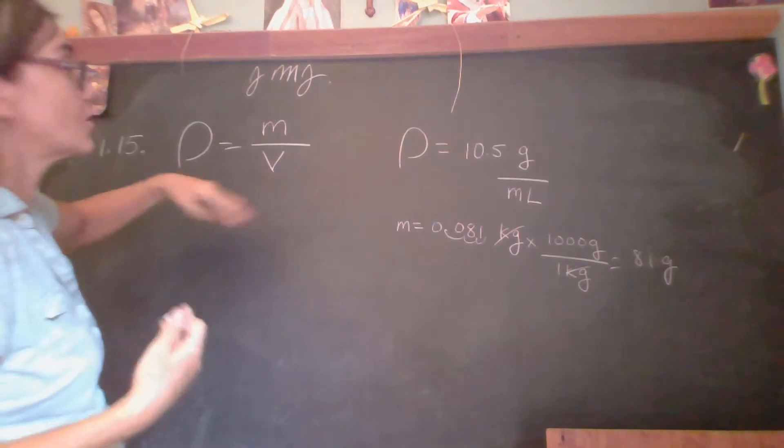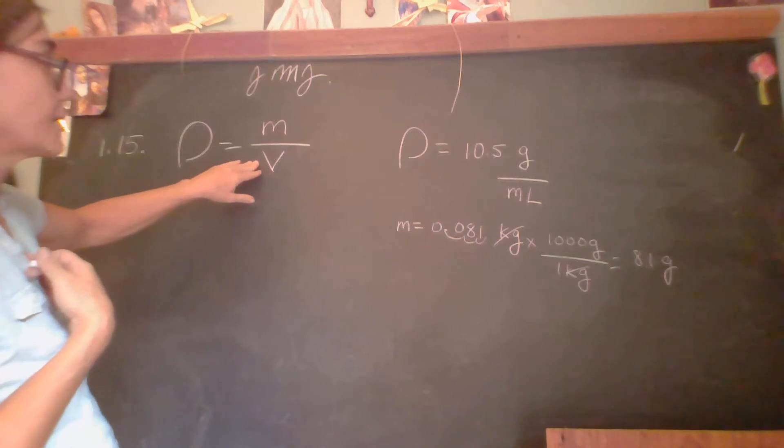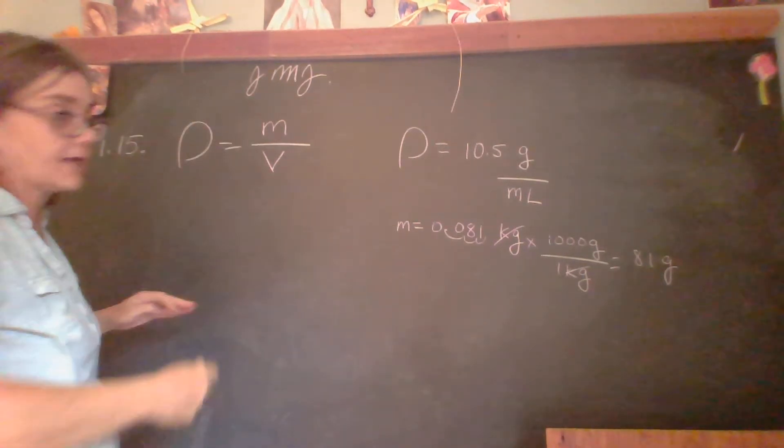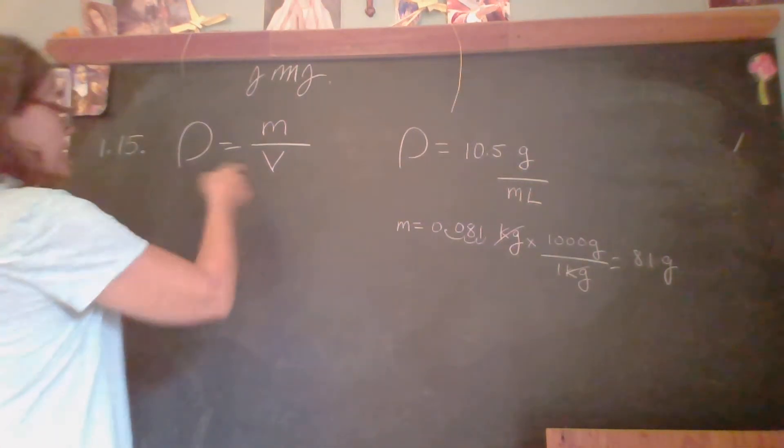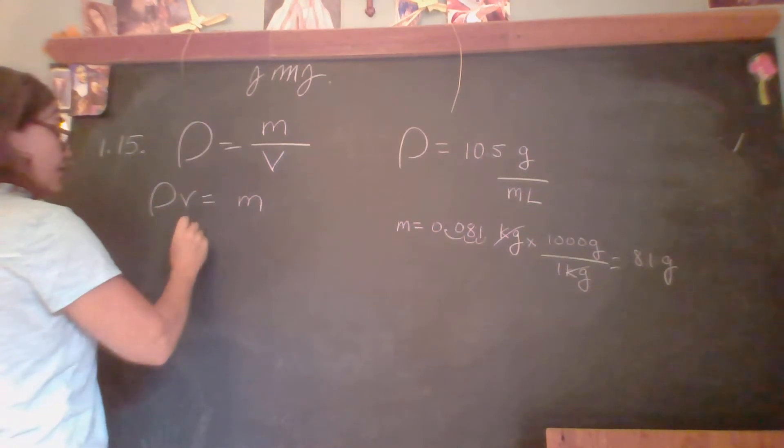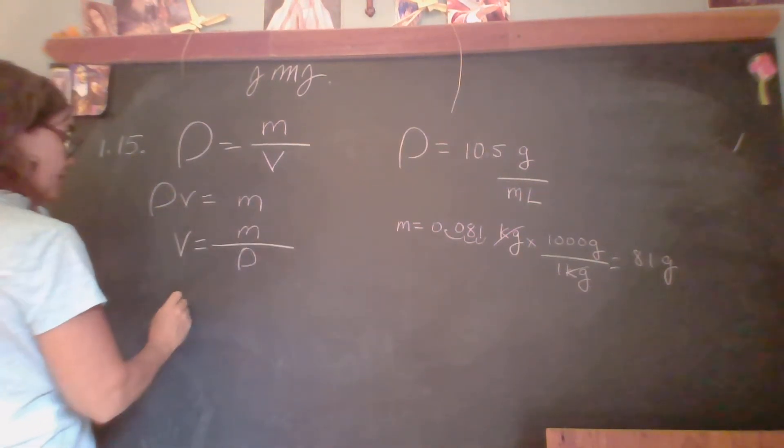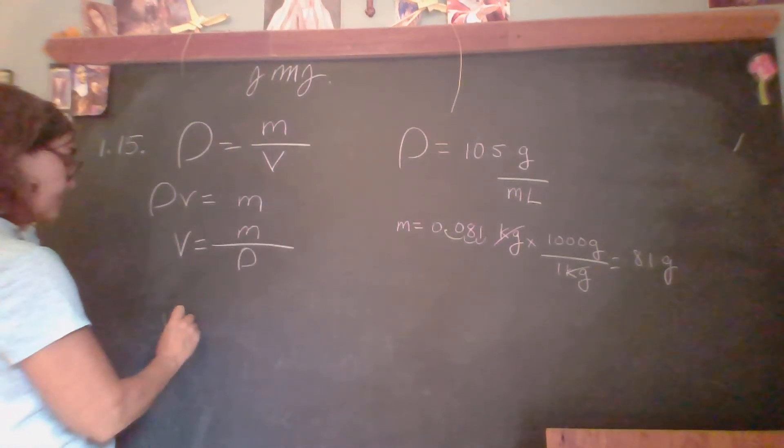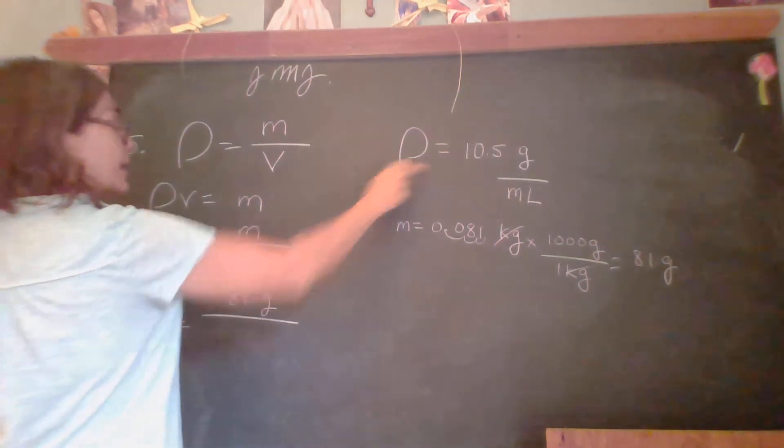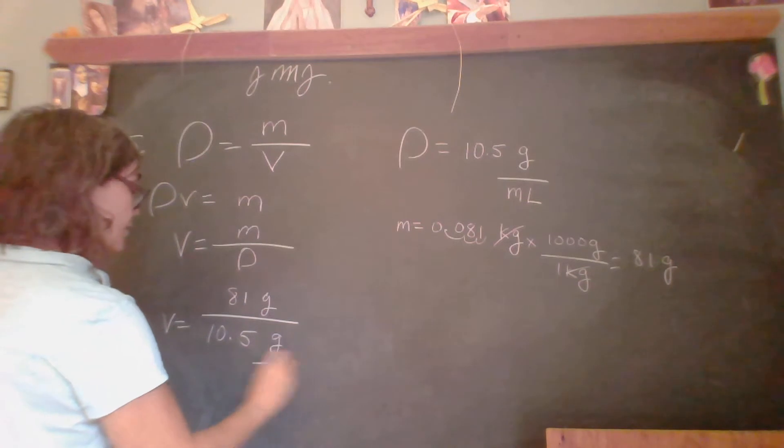Now, what I don't know is the volume. And so what I'm going to do is rearrange my equation here algebraically and then put the numbers in correctly. So I'm going to say density times volume equals mass. Volume equals mass divided by density.